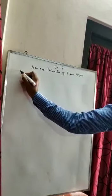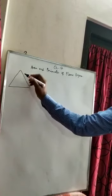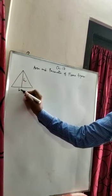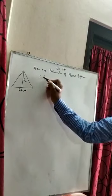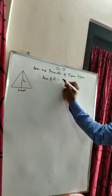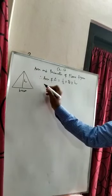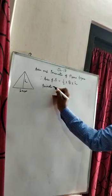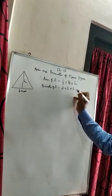First of all, we are going for triangle. This is the height of the triangle and this is the base of the triangle. Therefore, area of triangle is equal to half into base into height. Perimeter of triangle is equal to side plus side plus side.